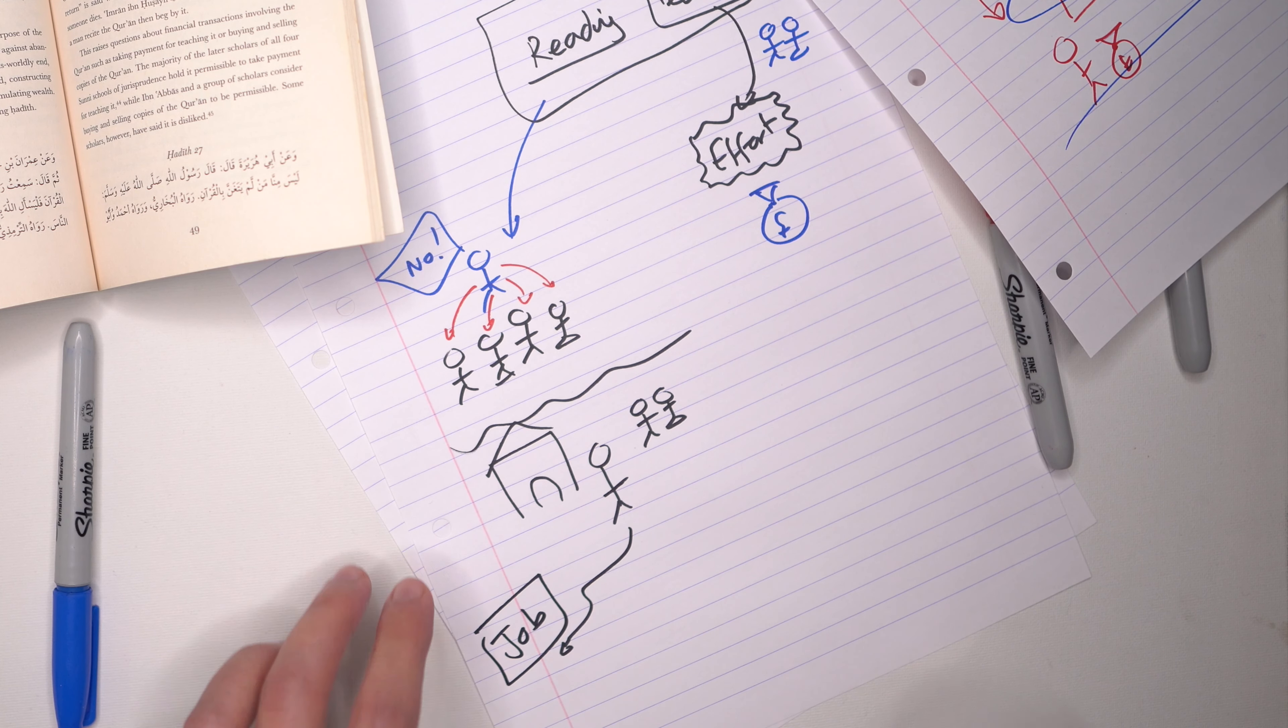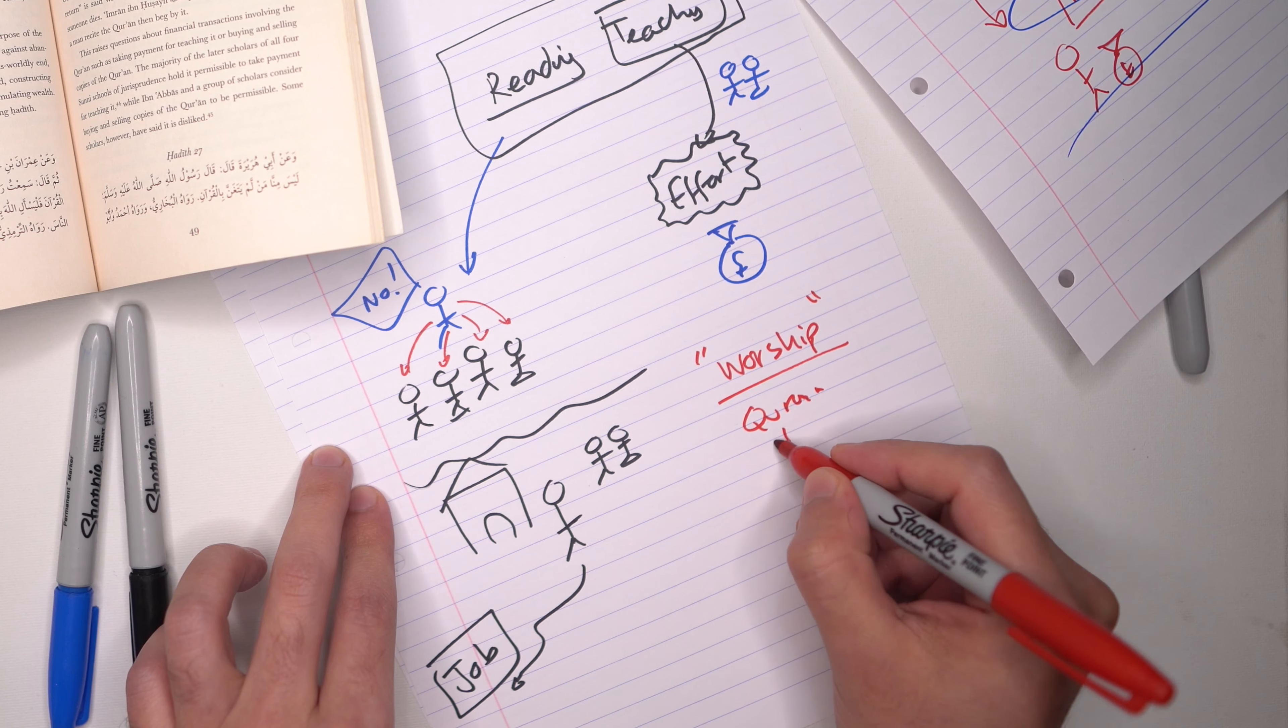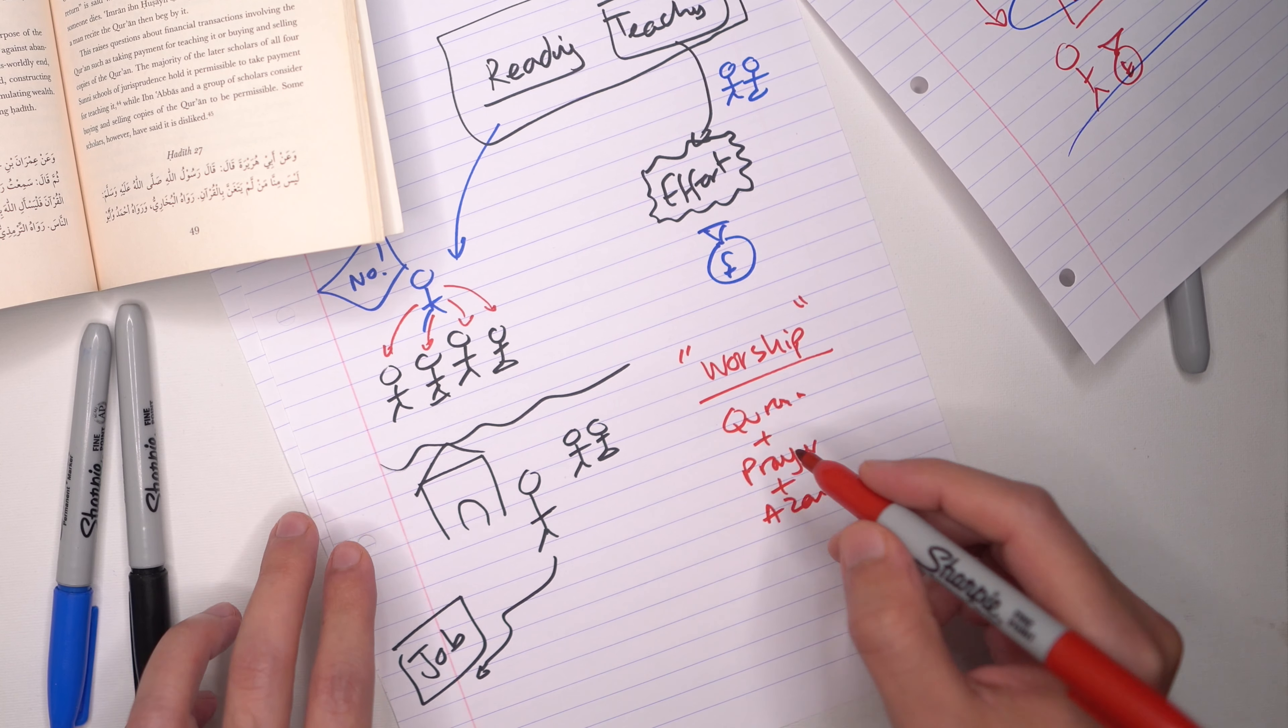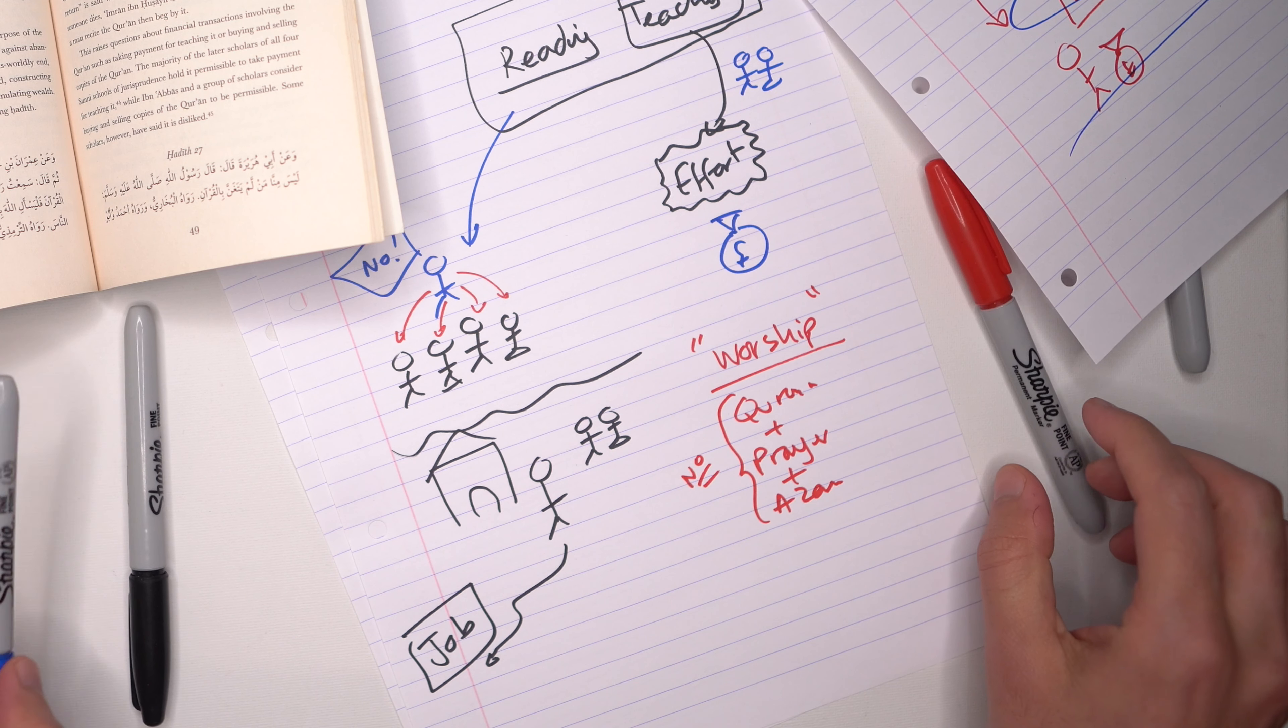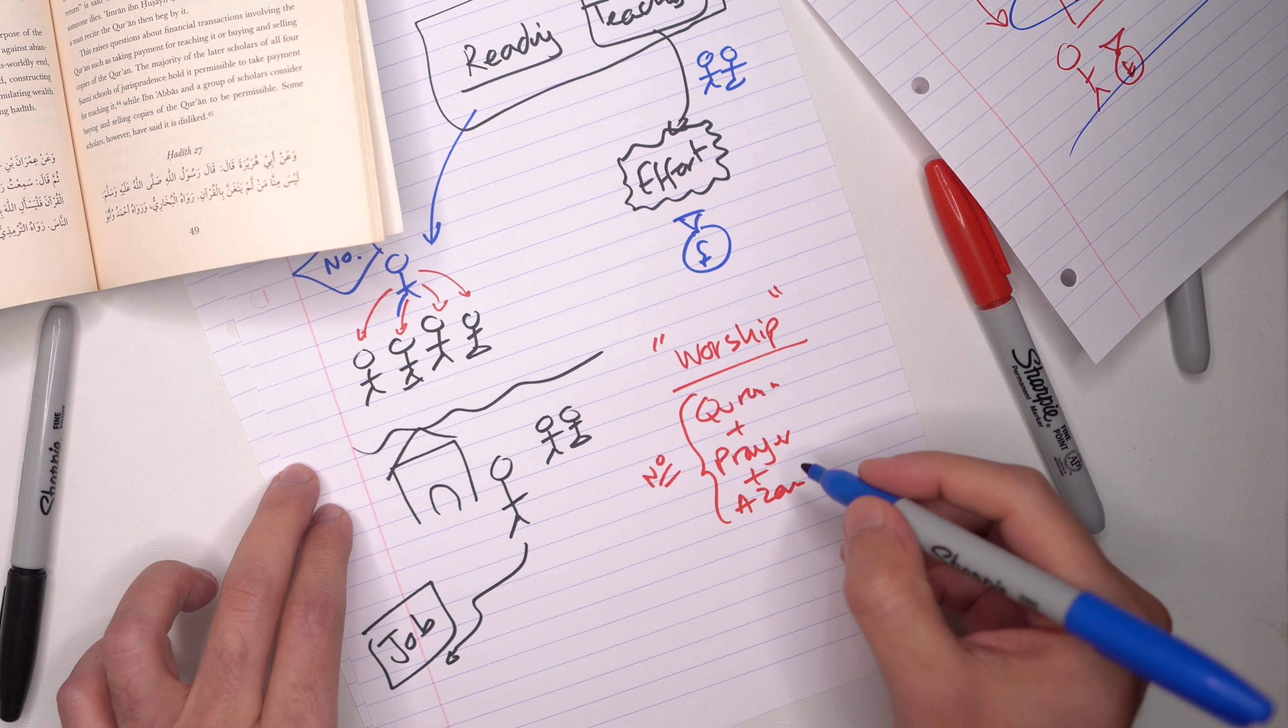So the scholars then said, okay, the rule now for this situation would be that any act of worship you're not allowed to charge for it. So Quran is worship, so Quran and prayer, salat, and adhan, giving the adhan, all these things you cannot, no payment for these, unless there is a fear that these will disappear in the world, that people will be too busy in other things and not be able to give time for this.